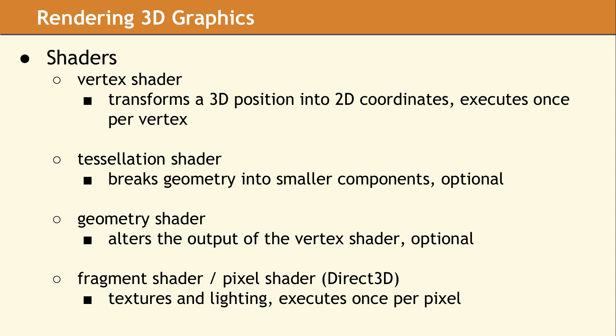The tessellation shader allows refining a very coarse model into a finer, smoother model. The geometry shader is usually used to define new geometry, such as projecting shadows from one object onto another. Both of these shaders are optional, and many applications do not have any reason to use them. Finally, the fragment shader is run once for every pixel or part of a pixel that a given triangle occupies. This shader is responsible for applying textures and usually lighting. The Direct3D API refers to fragment shaders as pixel shaders, although this is misleading since a fragment at the edge of a triangle may only occupy part of a pixel.